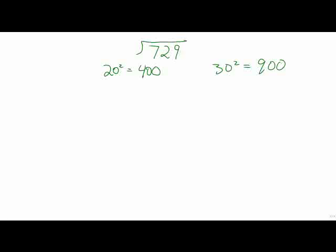Our number is going to fall somewhere between 400 and 900. Therefore, the number we're looking at is somewhere between 20 and 30. So the square root of 729 is going to fall somewhere in the middle of 20 and 30.